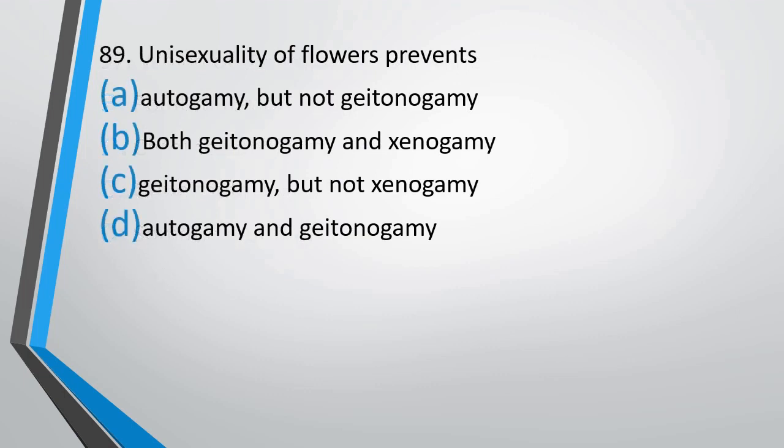Question number 89: Unisexuality of flowers prevents — autogamy but not geitonogamy; both geitonogamy and xenogamy; geitonogamy but not xenogamy; or autogamy and geitonogamy? The correct answer is option A — it prevents autogamy but it does not prevent geitonogamy.